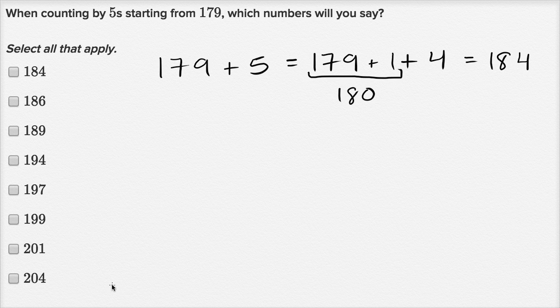Now let's keep going. We start at 179, then we go to 184. Then if we want to add 5 to that, well 184 plus 5, we add 5 in the ones place, we get 189.